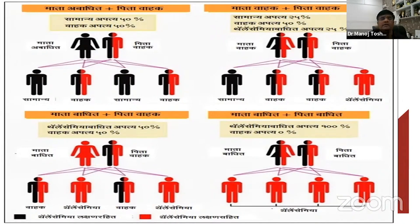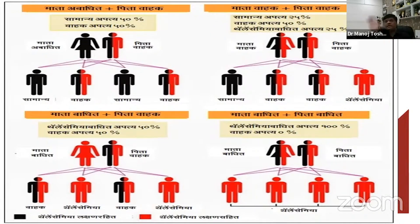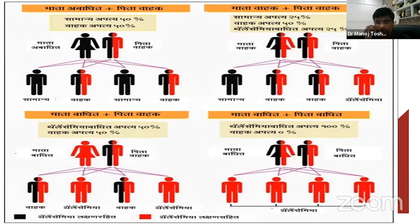They are just thalassemia minor — like Amitabh Bachchan, who is a carrier of thalassemia. Since Jaya Bachchan doesn't have thalassemia minor, Abhishek Bachchan is also normal. Ideally, two thalassemia minors should not marry, but even if they do, they should know their status. Whenever she is pregnant, we must do prenatal diagnosis at the third or fourth month. If the diagnosis is thalassemia major, we can do an abortion. If not thalassemia major — which is a 75% chance — we can carry on with the pregnancy.